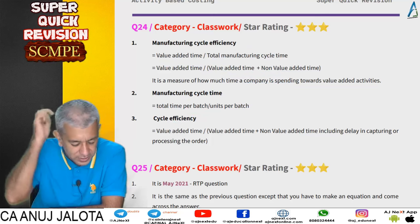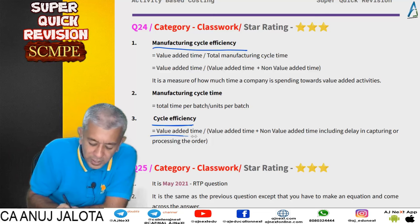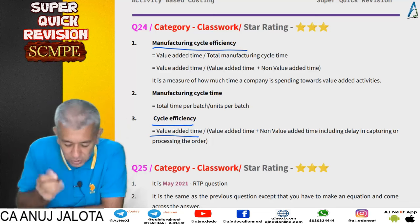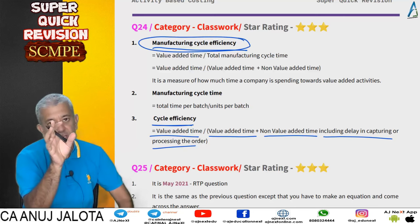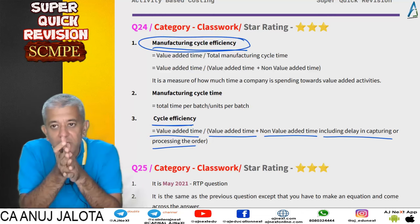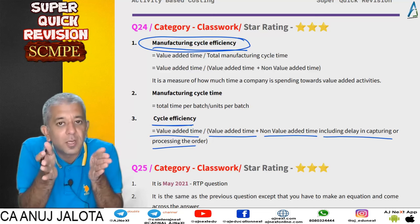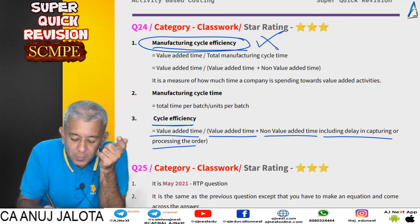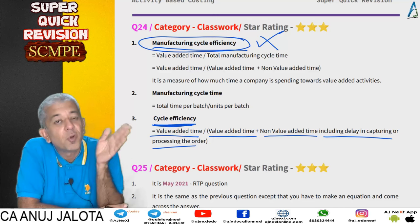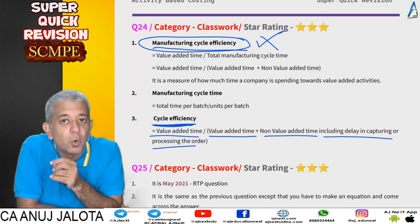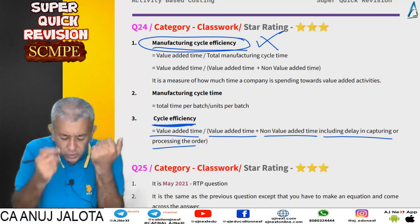Note the difference between manufacturing cycle efficiency and cycle efficiency. For manufacturing cycle efficiency, the numerator is value-added time and denominator is value-added plus non-value-added time within manufacturing. For cycle efficiency, the denominator also includes delay in capturing or processing the order — for example, if the marketing division takes five to six days to pass the order to the factory, that time is included in cycle efficiency but not in manufacturing cycle efficiency. Cycle efficiency covers from when the customer places the order to when the product is delivered.